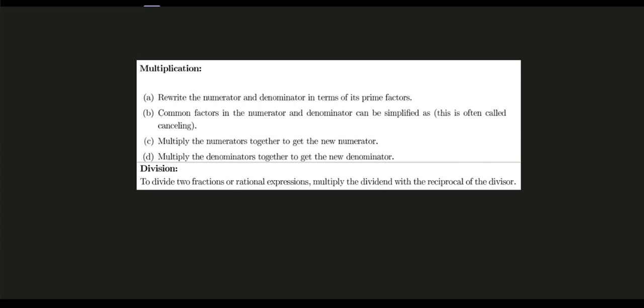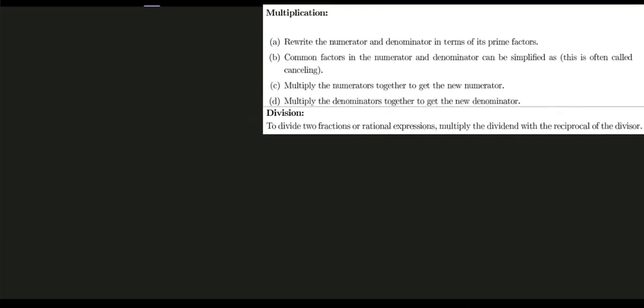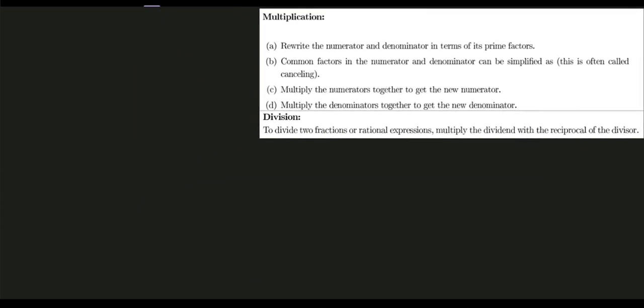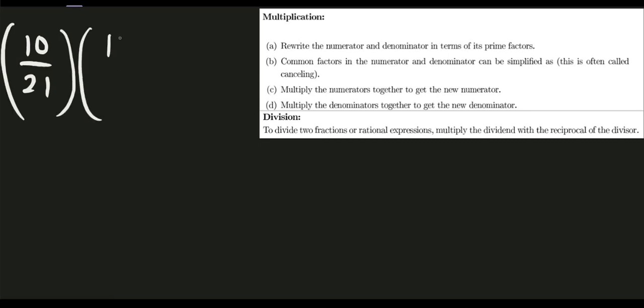So let's try to solve some examples. Number one, let's find the product of a fraction. We want to multiply 10 over 21 and 15 over 8. In terms of multiplying fractions, we are allowed to multiply numerator by numerator and denominator by denominator. But to express our answer reduced to its lowest term, let's apply our rules here.